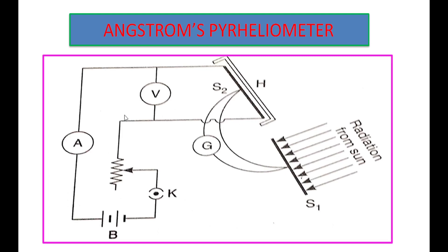Now we switch on the electric circuit by placing the plug key. Current passes through S2, so S2's temperature increases. The temperature of S2 is adjusted until it equals the temperature of S1, so the galvanometer shows null deflection. Null deflection means both S1 and S2 are at the same temperature.